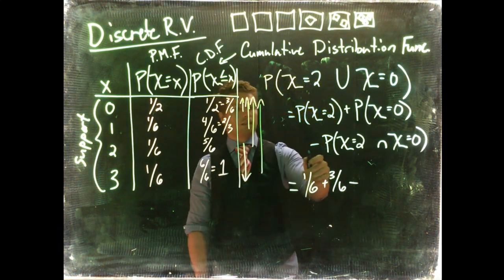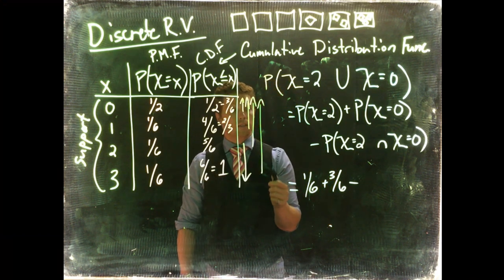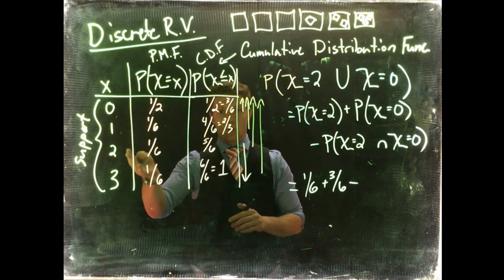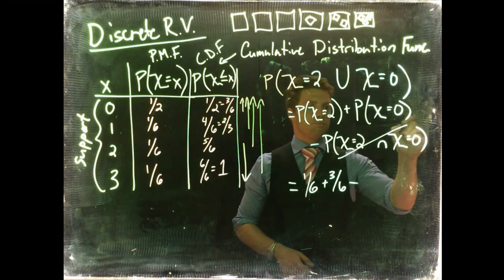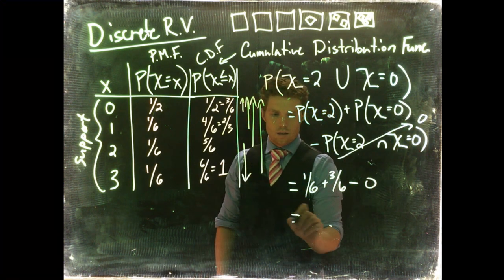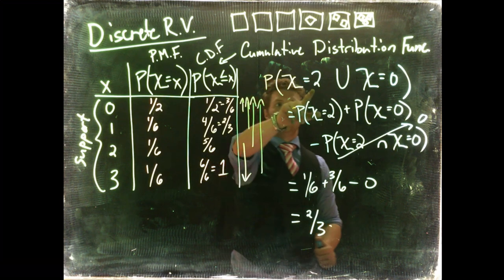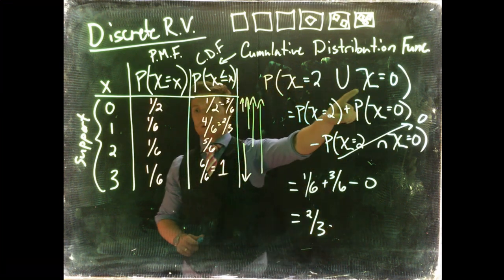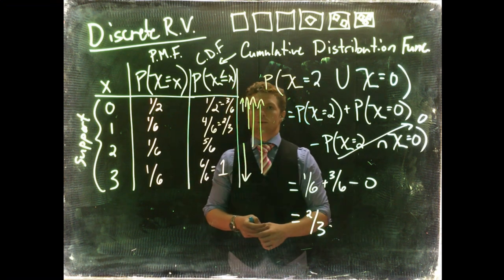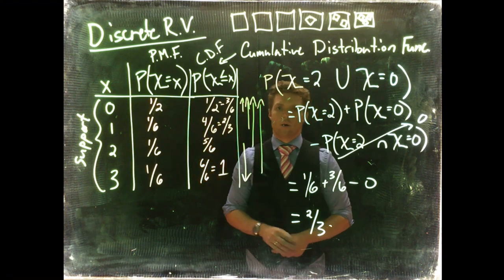Okay, so now we've got this intersection. Okay, so remember, this intersection is only important if they are not mutually exclusive. Well, the nice thing is when we roll a dice, we can't roll a 0 and a 2 at the same time. So this intersection term just goes to 0. The probability that they intersect is 0. And so our final probability is 2 thirds when we simplify, or the probability of rolling a 2 or rolling a 0 is 2 thirds. So anyways, I hope that helps you being able to manipulate and play around with our support, our PMF, and our CDF. So hopefully that helps.